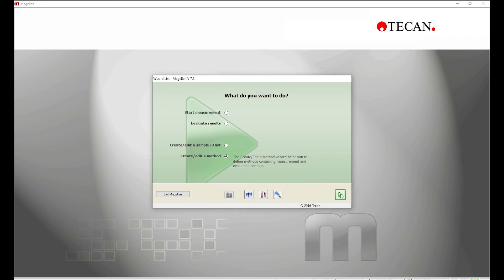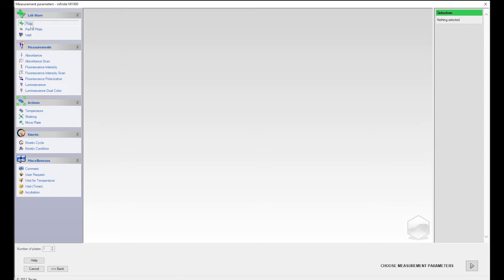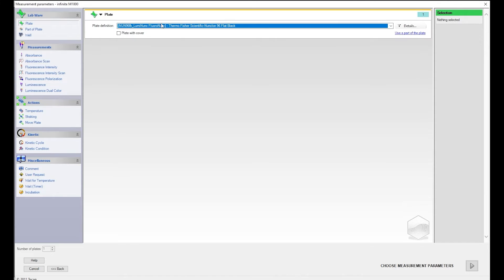Open your plate reader's software. We use Magellan by Tecan. Select Create and Edit a Method. Drag and drop part of plate into the Method section. Under Plate Definition, select your desired plate from the drop-down menu.